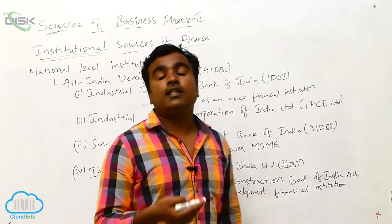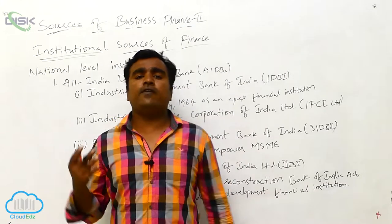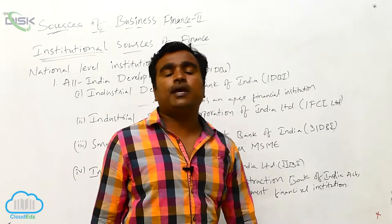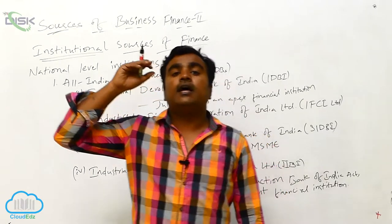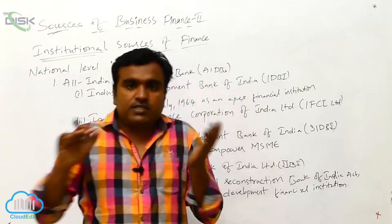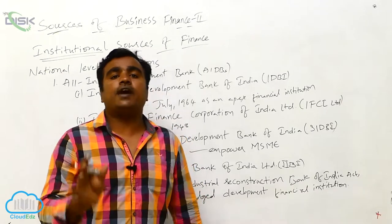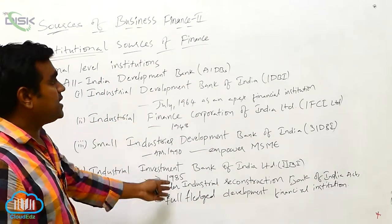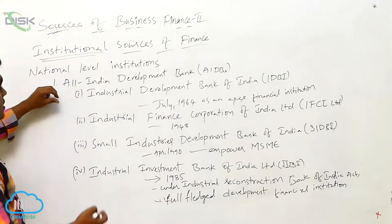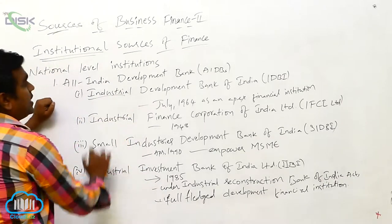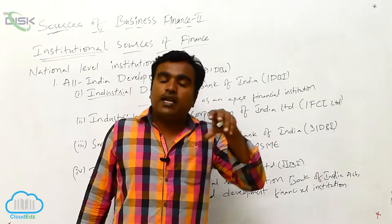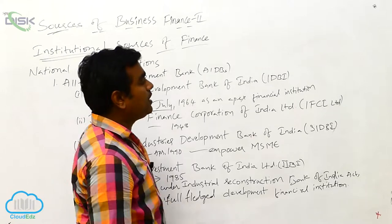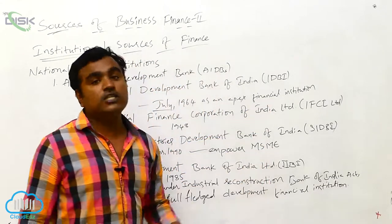Based on requirements, the Indian government has set up different types of financial institutions. Among them is the All India Development Bank, which is concentrated on India itself and mainly provides finance to large scale and medium scale industries. One such institution is the Industrial Development Bank of India (IDBI), set up in July 1964.